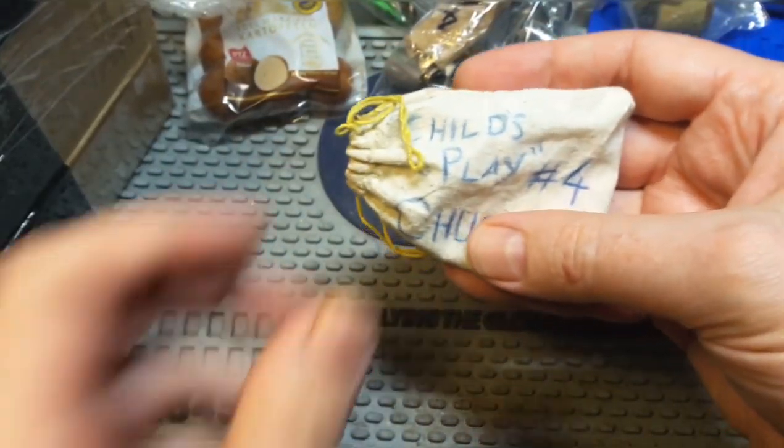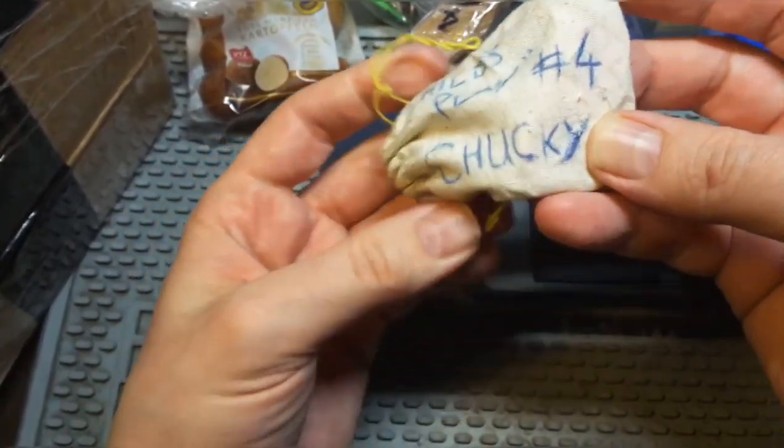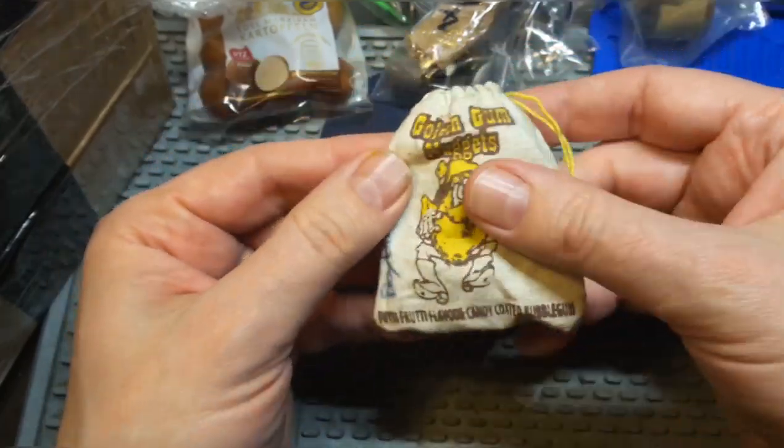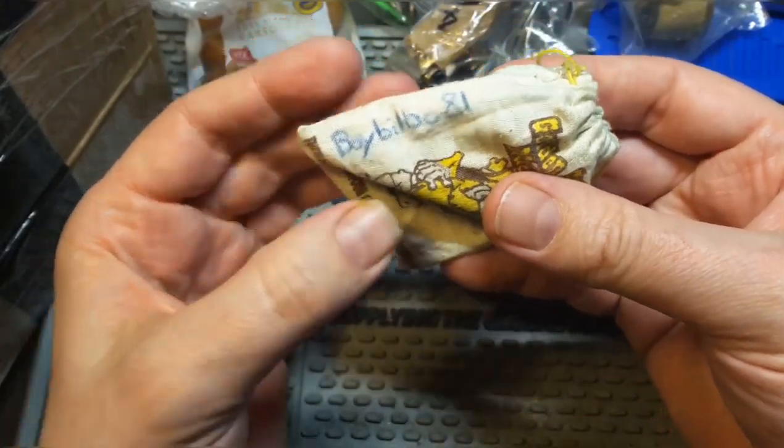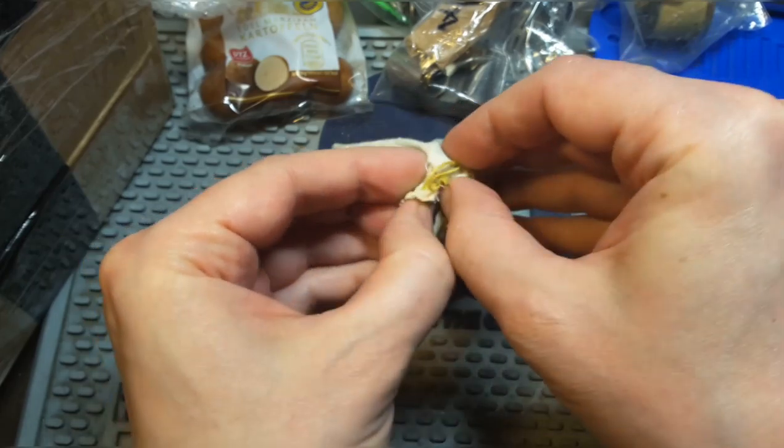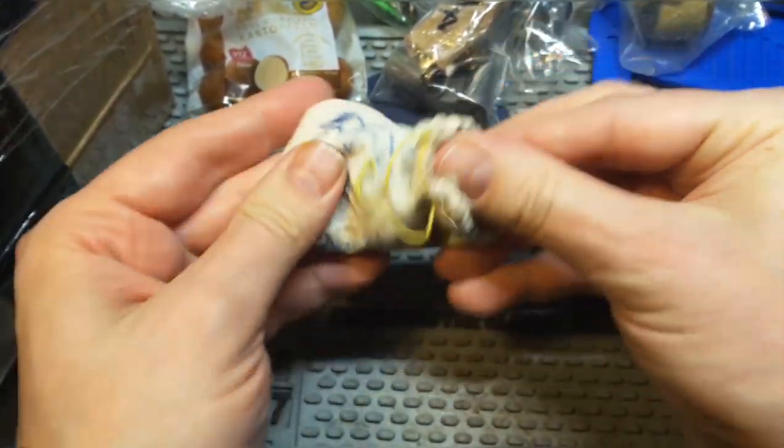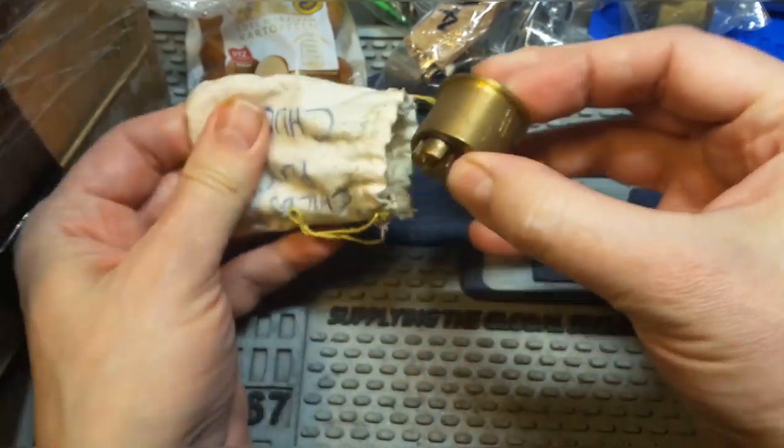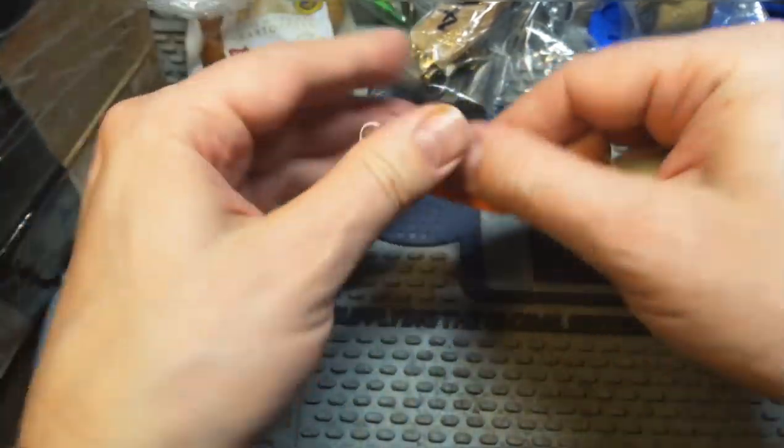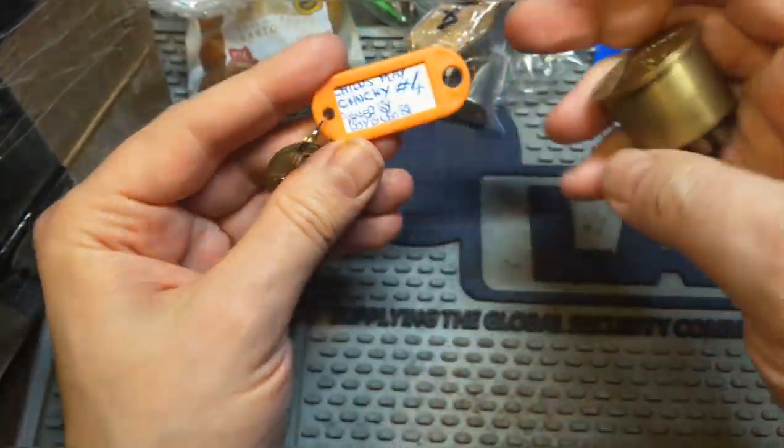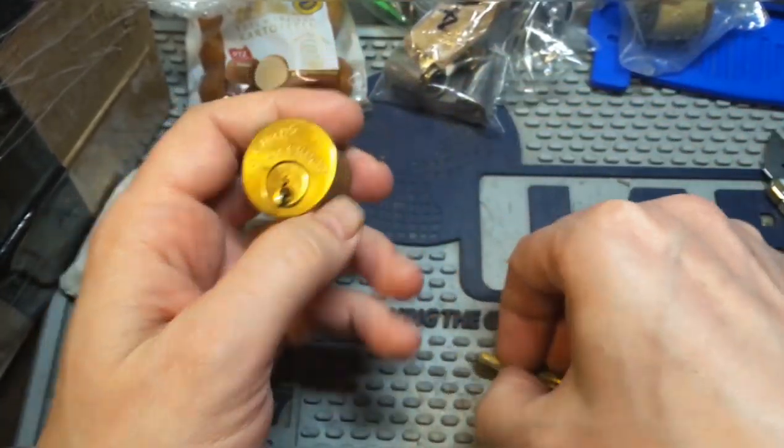Another challenge lock. Child's Play Number 4, Chucky. Boy bilbo 81. Also another challenge lock maker that I don't have any locks picked so far. Yeah, really nice.